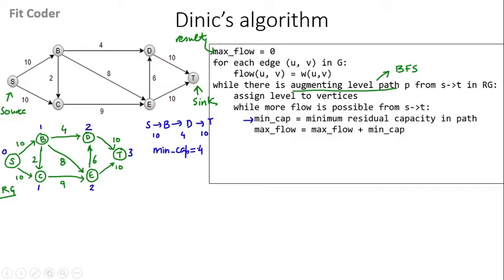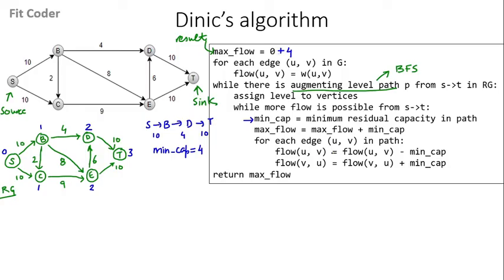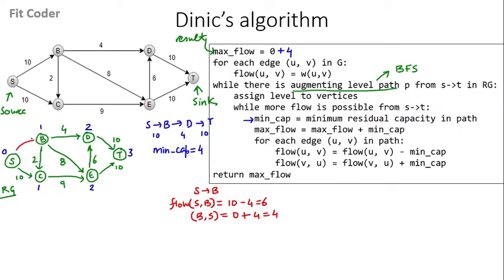We add this minimum capacity of 4 to the maximum flow. Then for each edge U to V in this path, we subtract the minimum cap from the flow in direction U to V and add the minimum cap in the reverse direction. For the edge S to B: flow of S to B becomes the initial flow 10 minus minimum cap 4, giving 6. Flow from B to S becomes the initial flow 0 plus the minimum capacity 4, giving 4. Let's draw this in the graph: S to B is 6 and B to S is 4.